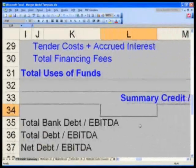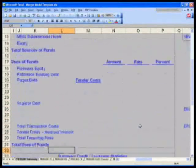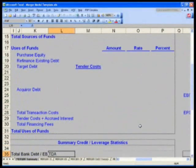Let me zoom out so I can explain the detail behind sources and uses here. Let's first start with the uses of funds. We always have to figure out how much money we need, and then we have to figure out where we're going to get it from.